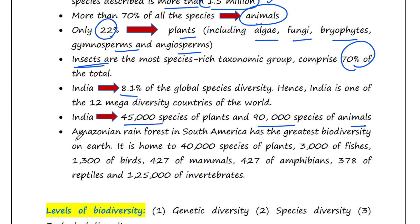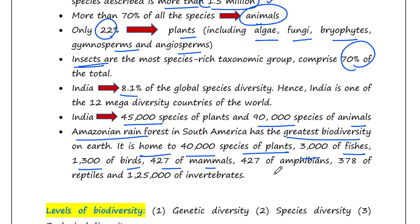The Amazonian rainforest in South America has the greatest biodiversity on earth. It is home to 40,000 species of plants, 3,000 of fishes, 1,300 of birds, 427 of mammals, 427 of amphibians, 378 of reptiles, and 1,25,000 of invertebrates.